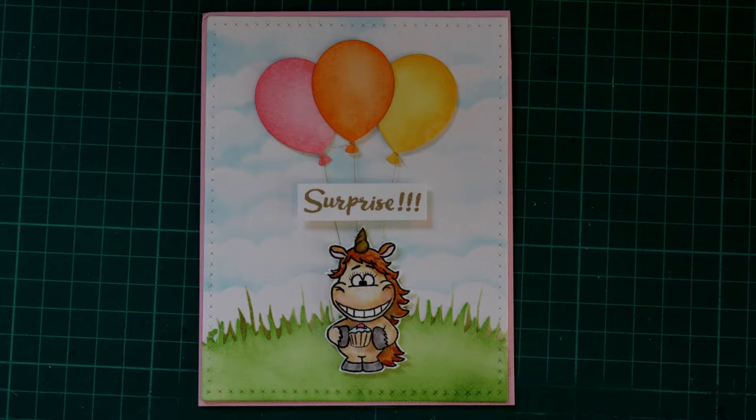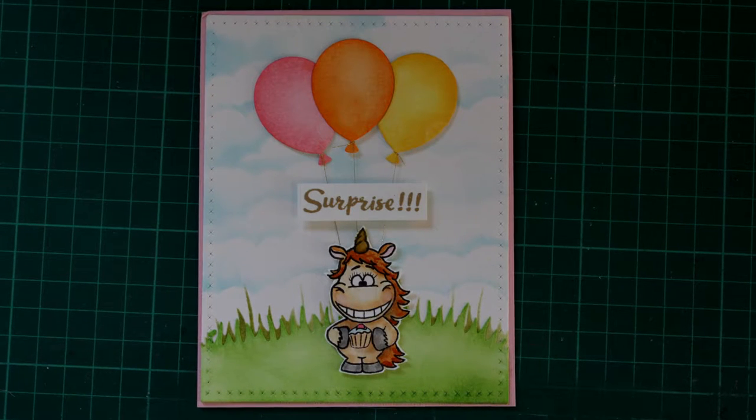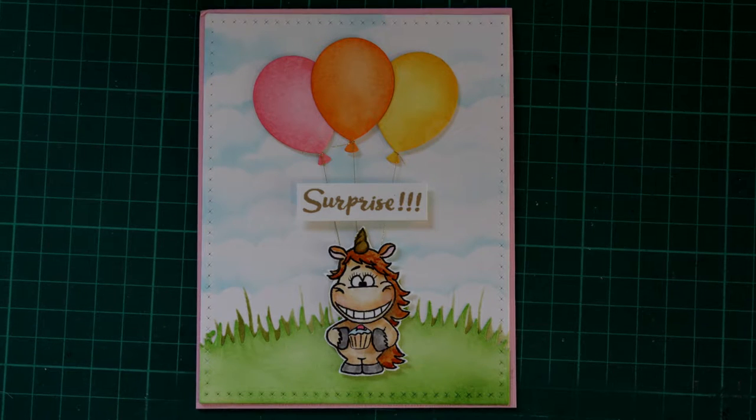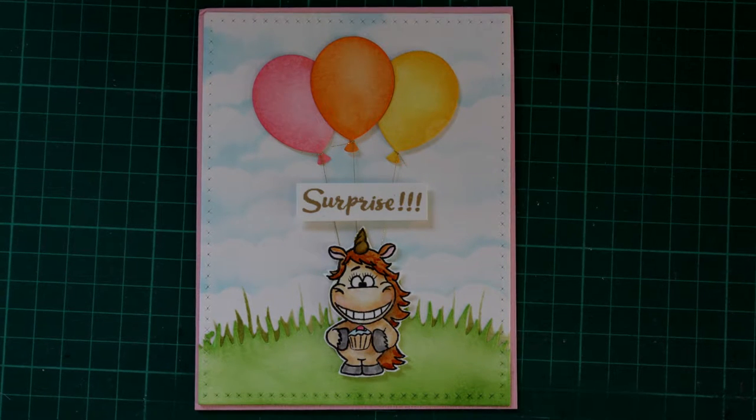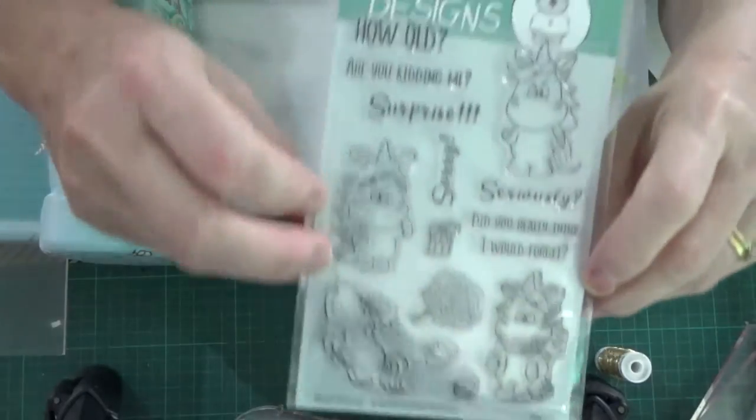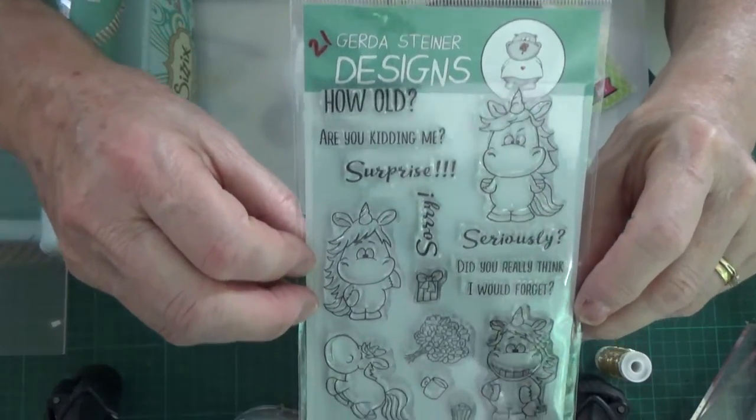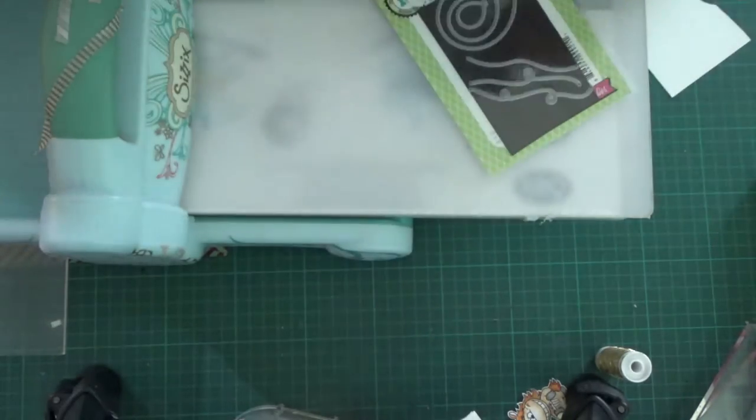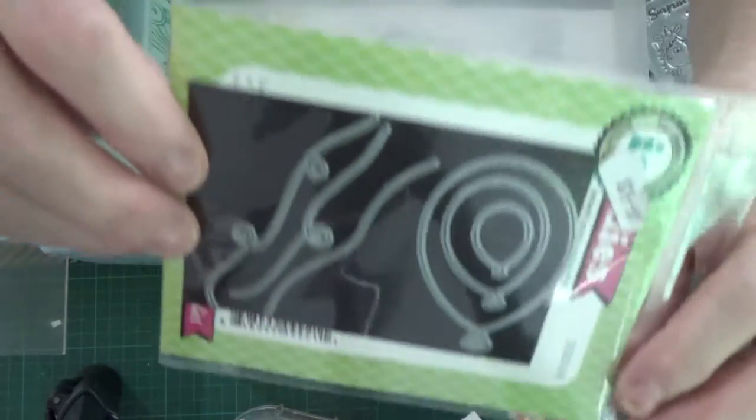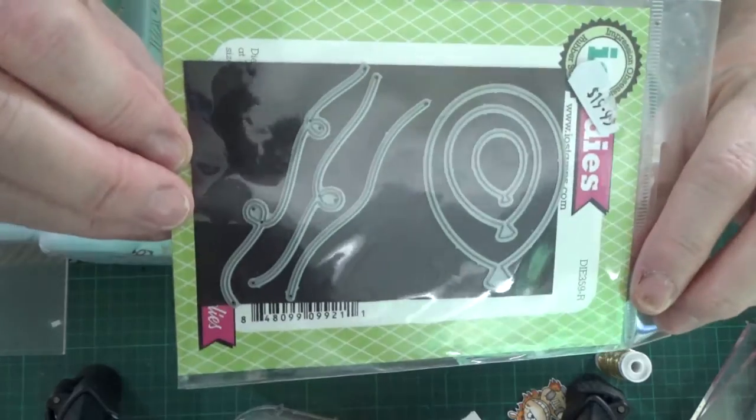Hi, welcome to SFG Cards and Craft. Today I'd like to show you how I did this little card using Gerda Steiner Moody Unicorn stamp set. There's the stamp set on the screen now - there's four unicorns in it. I've just used the one on the bottom right corner there. There's also an Impression Obsession balloons stamp that I've used, the middle one, the middle sized one.